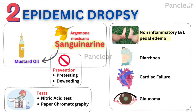When you use that adulterated oil, it causes epidemic dropsy. The features include non-inflammatory bilateral pitting edema, diarrhea, cardiac failure, and also glaucoma. These four are characteristic of sanguinarine toxicity in mustard oil, which is characteristic of epidemic dropsy.